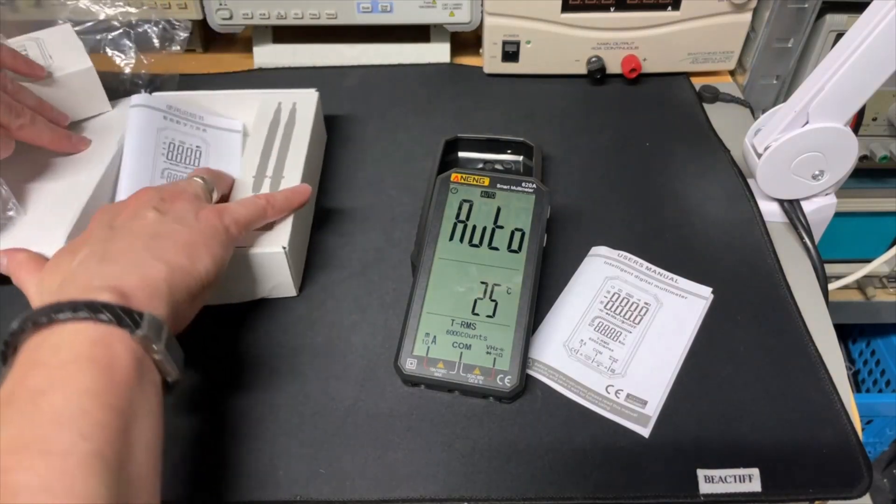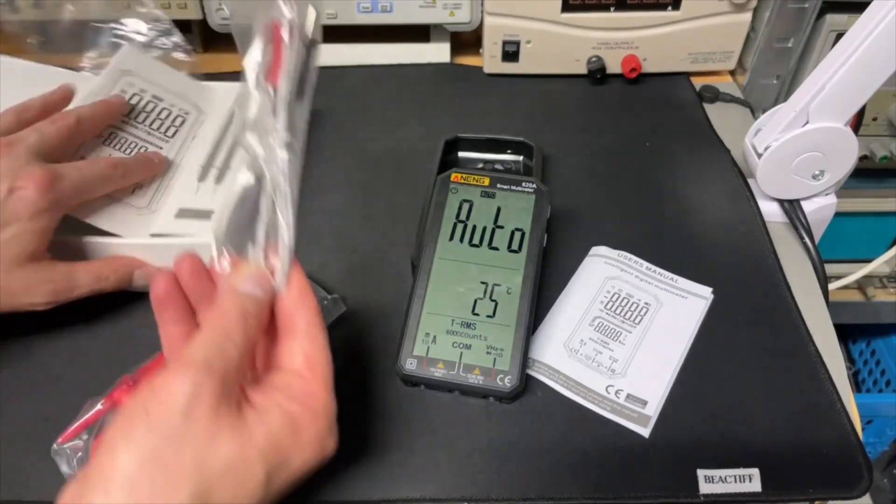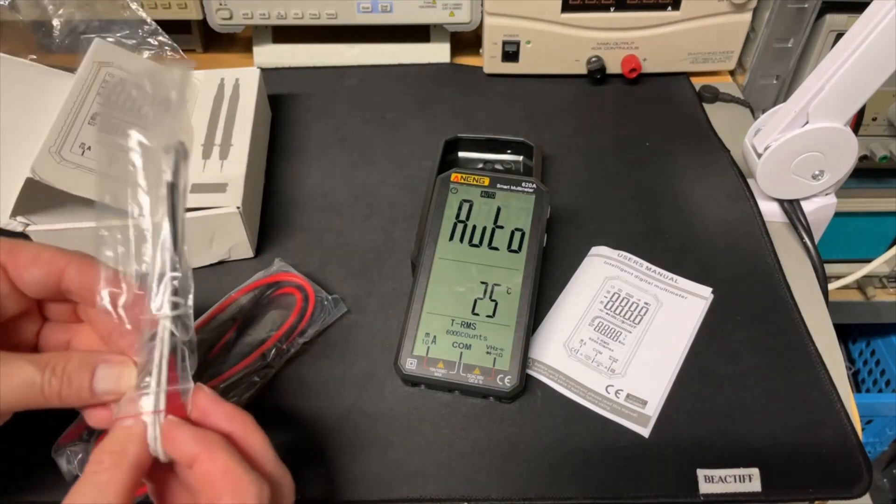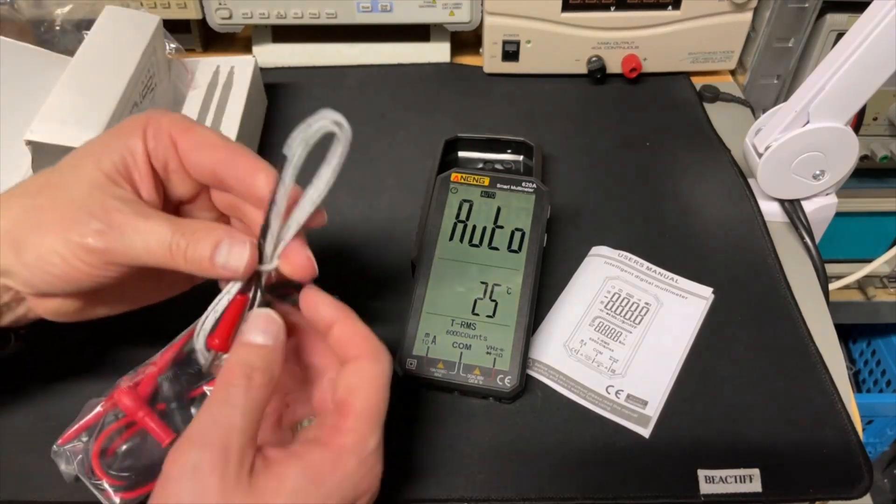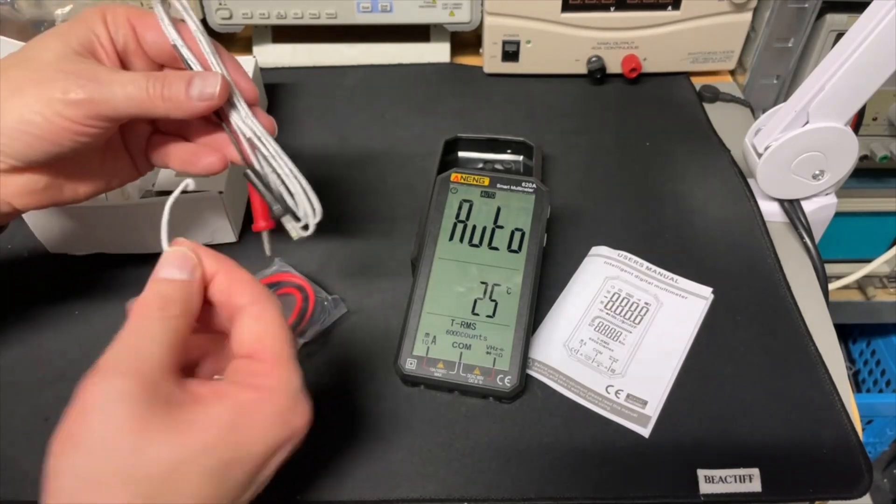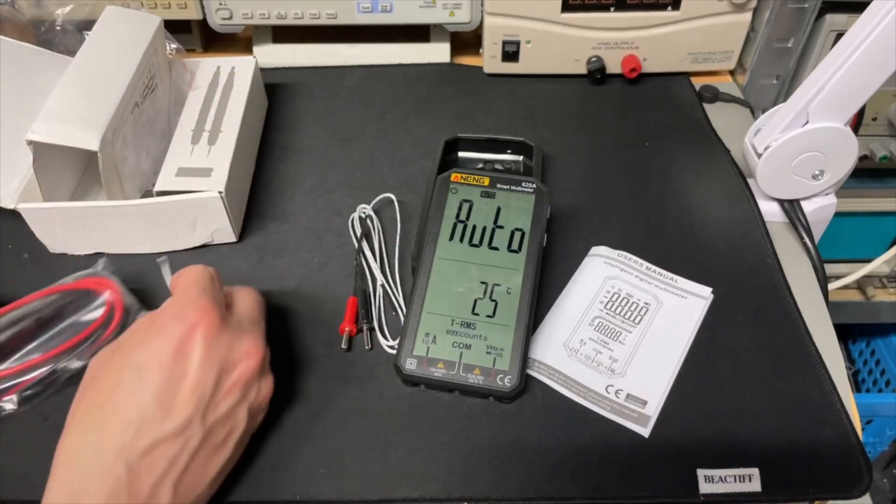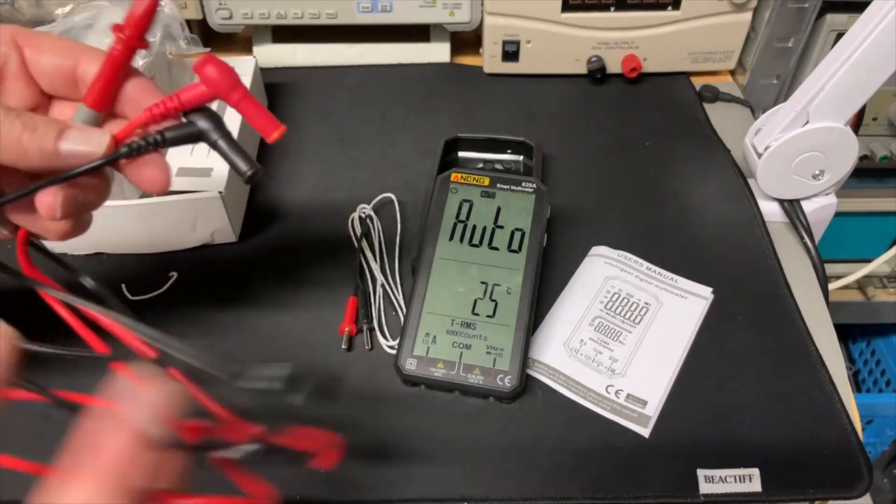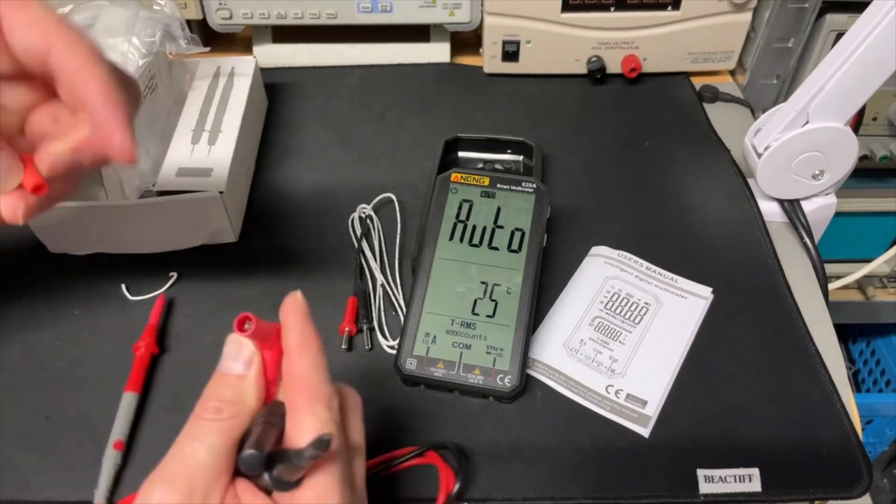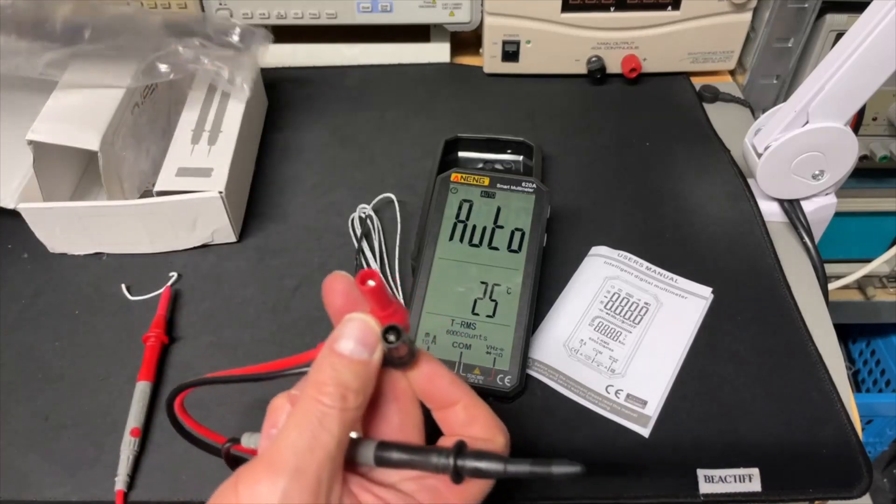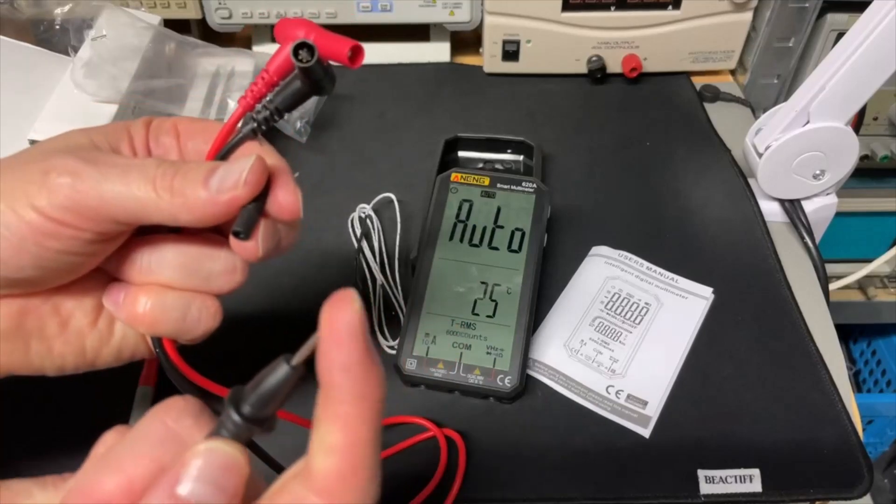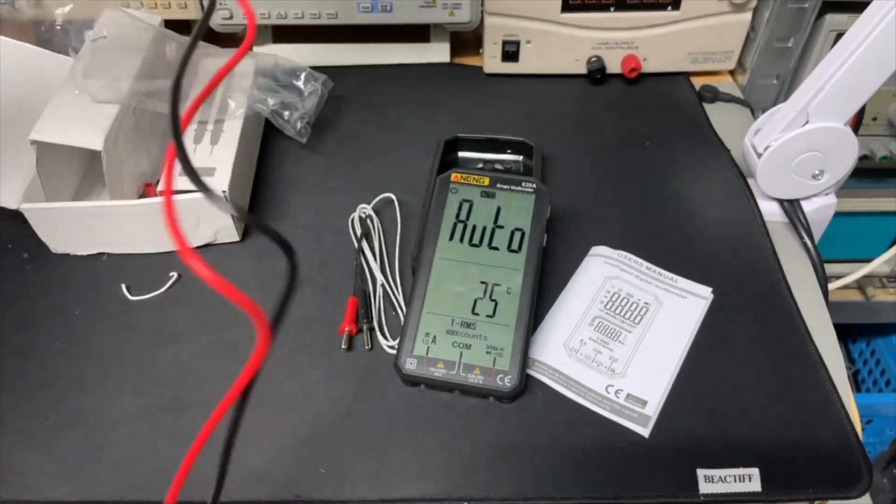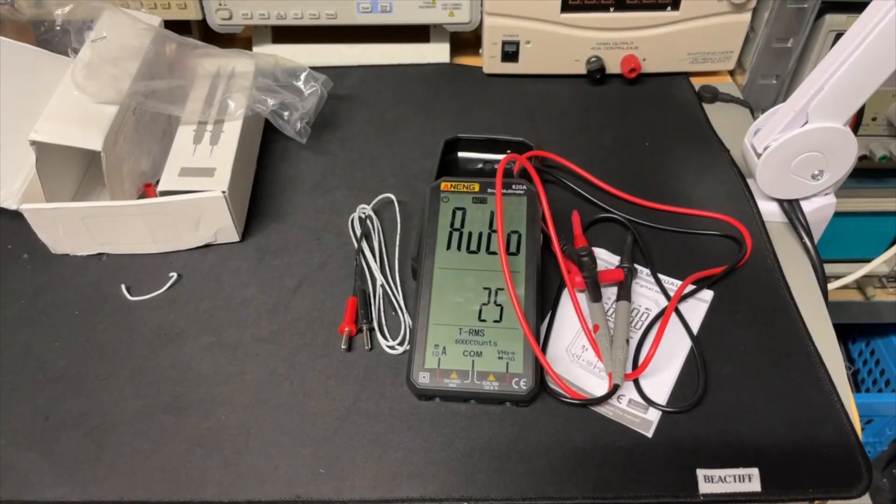It comes with probes. It even comes with the temperature probe, that I did not expect. Maybe that is the NVT setting, I think we call it an NTC. So there is a temperature probe, that is kind of cool. These don't look bad at all. They even have protection on the tips. They're sharp, so that's good. I like that. Not bad at all. Rated for a thousand volts, so even if all of it is true you are still safe.